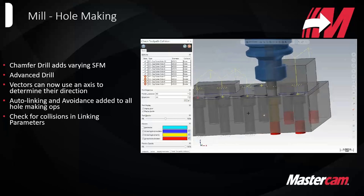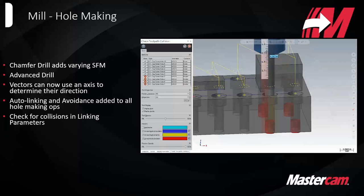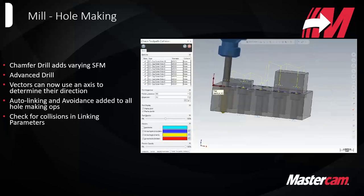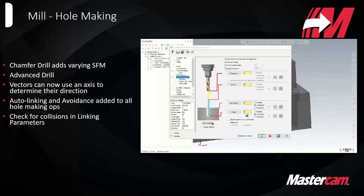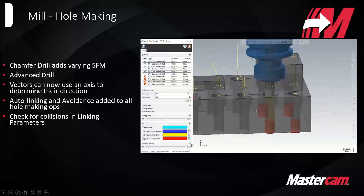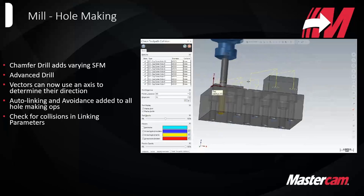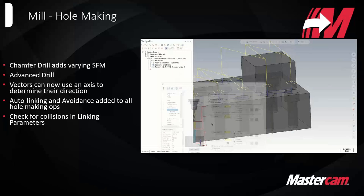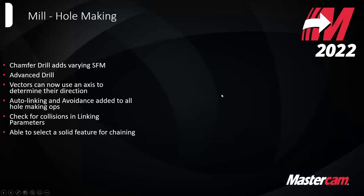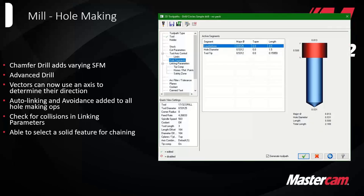The check collisions button within the linking parameters page pulls up a dynamic interface where all your features are listed on the left, and you get color-coded feedback on what's reachable and what's not — whether it be the shoulder, the tool, the holder, or the shank. You're also now able to select solid features for chaining. Even in a simple 2D drill — not necessarily using the advanced drill feature — you can select that whole solid feature for chaining and get idea of depths and diameters for a given hole.